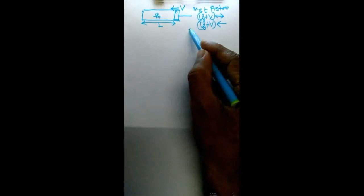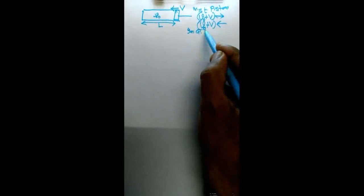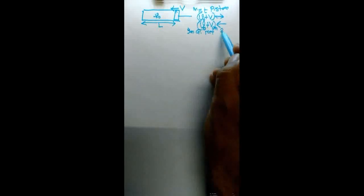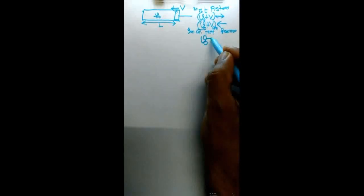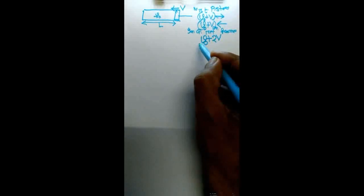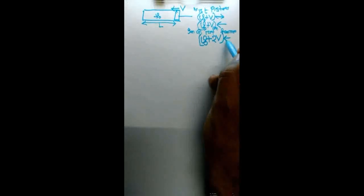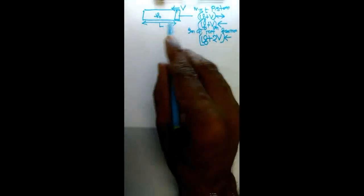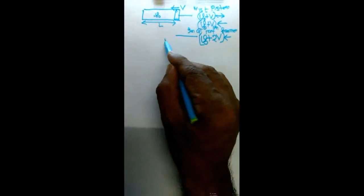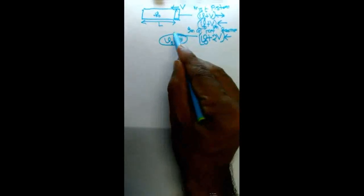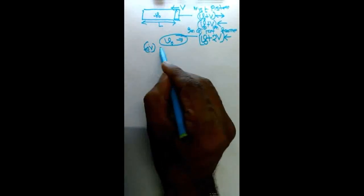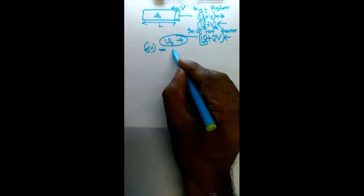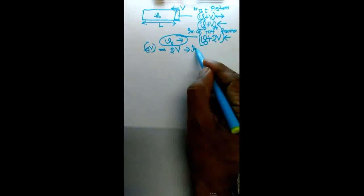In the ground reference frame, the velocity of the particle with respect to ground is equal to V0 + 2V. The particle was moving with velocity V0 before the collision, and after the collision it is moving with velocity V0 + 2V. So the change in velocity, delta V, during each collision is equal to 2V.